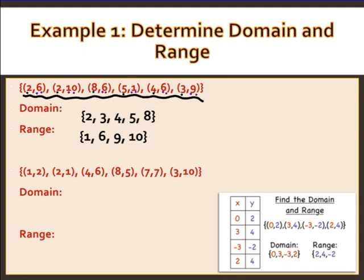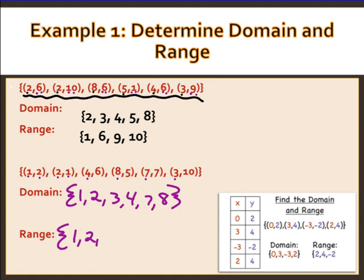For the second set, the domain — all the x-values — is {1, 2, 3, 4, 7, 8}. The range — all the y-values — is {1, 2, 5, 6, 7, 10}. So there we've identified our domain and range. Sometimes you might see them rewritten as a table with all your x's on one side and all your y's on the other — x's are the domain, y's are the range.